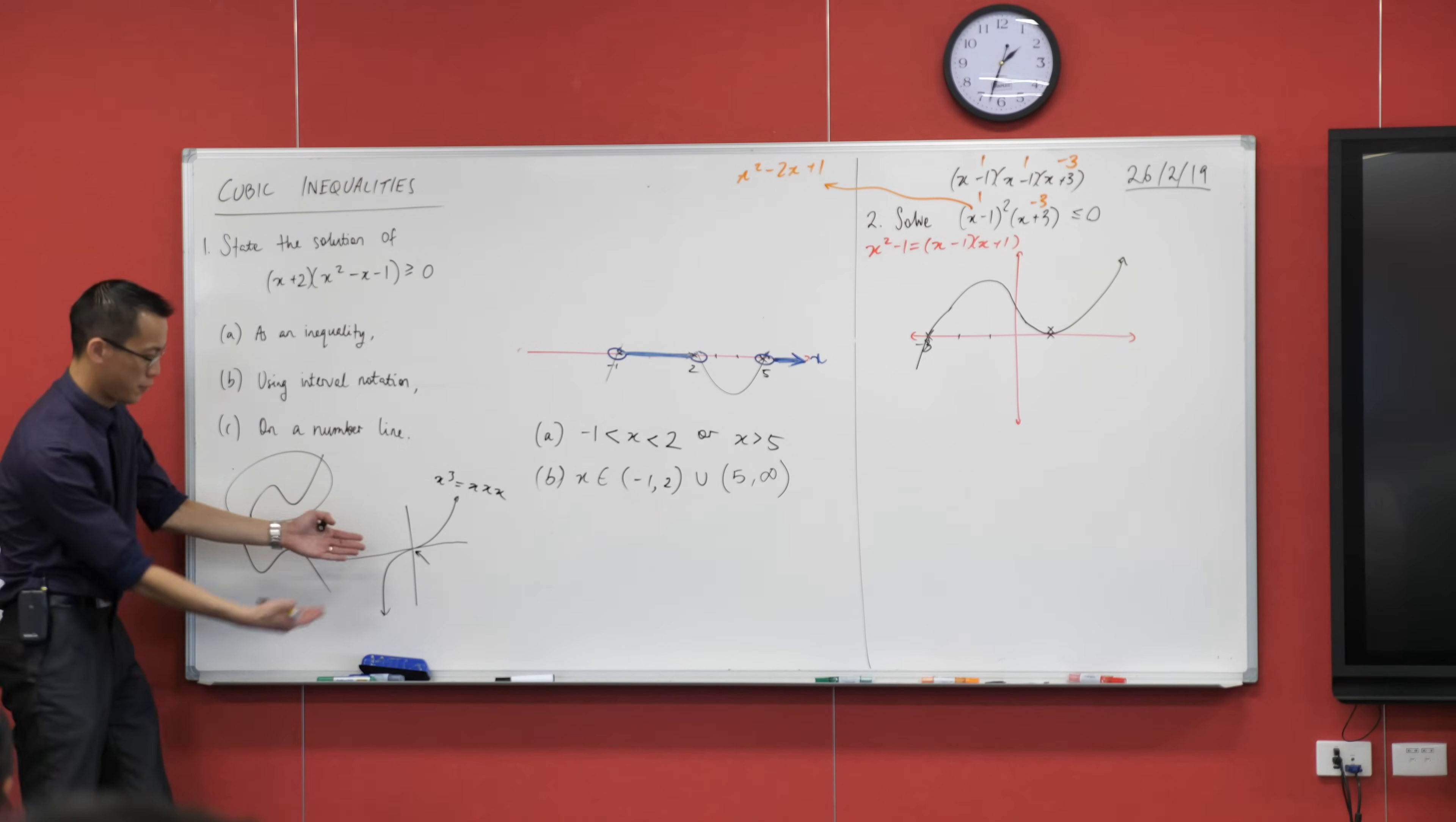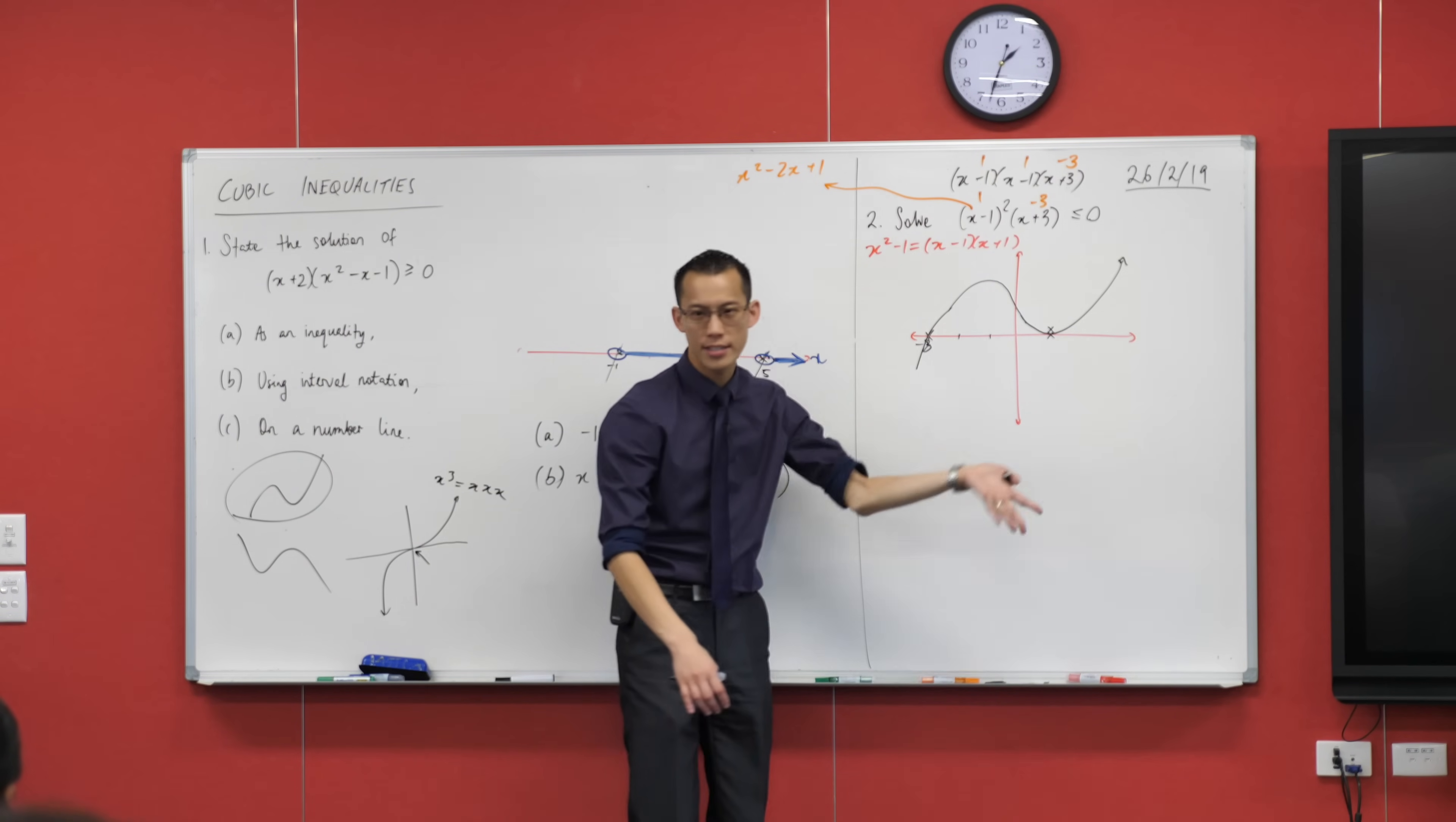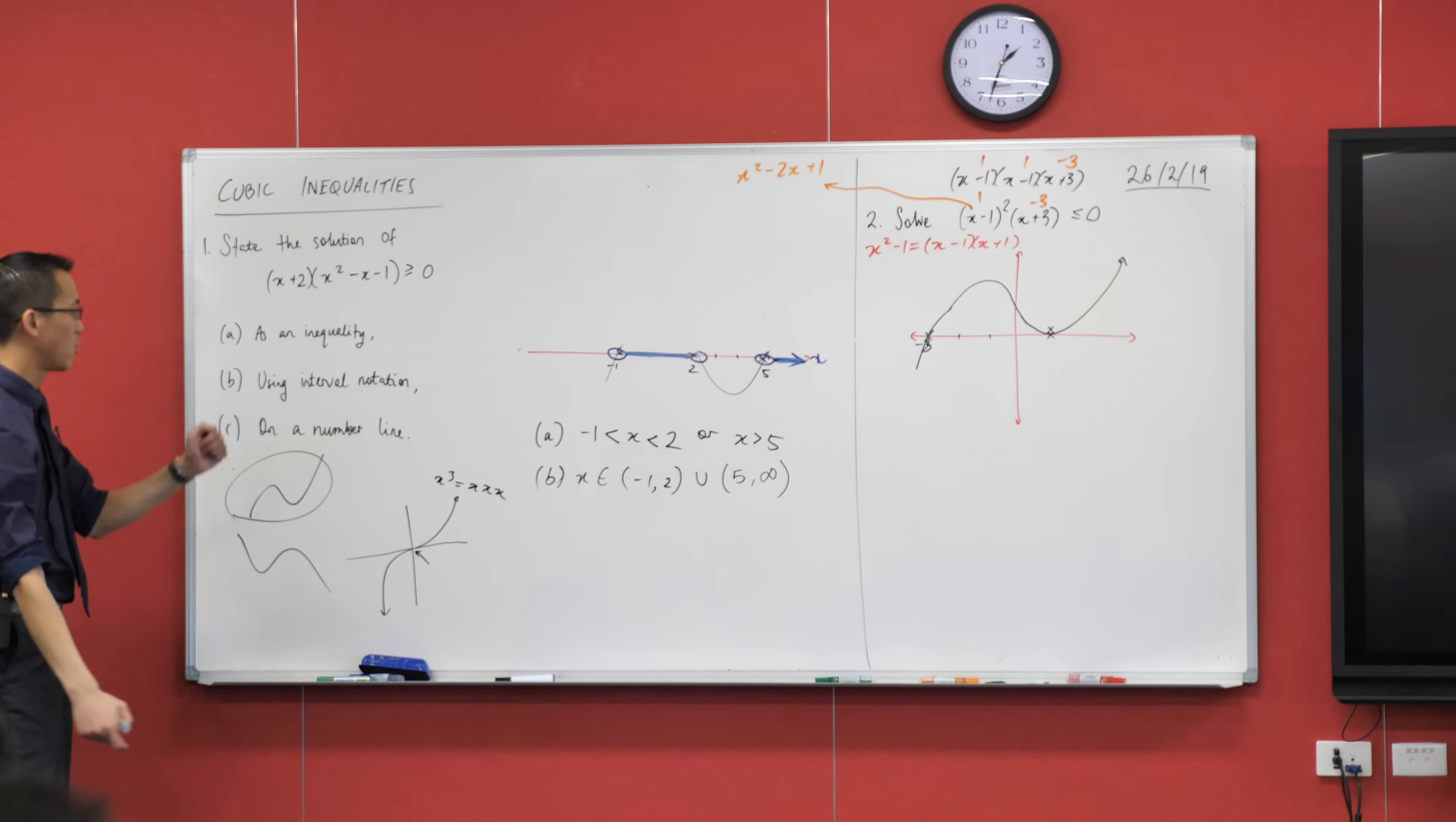So the number of roots that you have actually changes the behavior a little bit. This is actually what we call a double root, but we'll go into that in a little more detail later on. This is the shape. It's a bit messy, but I don't care. Why not? Because it's just a sketch in order to solve the real question.